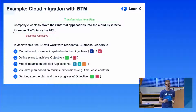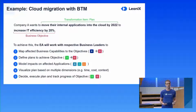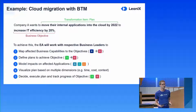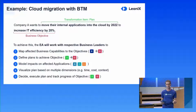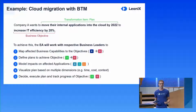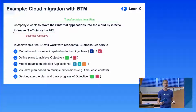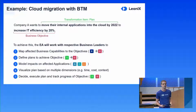Let's start with a very easy example. Company A wants to move their internal applications into the cloud by 2022 to increase IT efficiency by 20%. If we take that sentence, we would match the transformation item plan to moving internal applications into the cloud, as we have a defined end state and a timeline. The business objective is increasing IT efficiency by 20%.